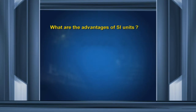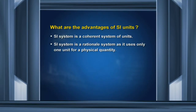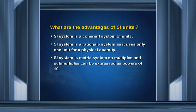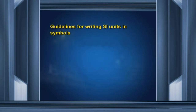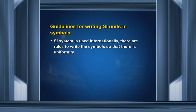What is the advantage of SI units? SI system is a coherent system of units. SI system is a rational system as it uses only one unit for a physical quantity. SI system is a metric system, so multiples and sub-multiples can be expressed as powers of 10. SI system is internationally accepted, so uniformly used by people of all countries. That becomes simpler whether you take a measurement here in India or anywhere else. There are also guidelines for writing SI units in symbols — SI system is used internationally, so there are rules to write symbols of units to ensure uniformity.